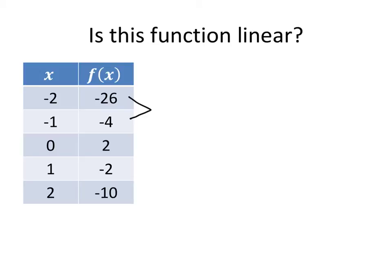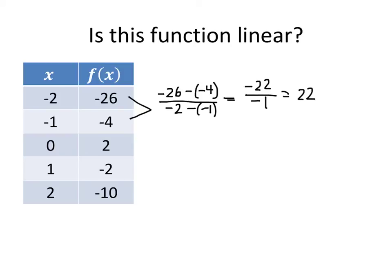For the first pair of points, we have a change in y which is negative 26 minus negative 4, divided by negative 2 minus negative 1. On the top, negative 26 minus minus 4 is negative 22, and on the bottom, negative 2 minus minus 1 is negative 1. So that gives us an average rate of change of 22.